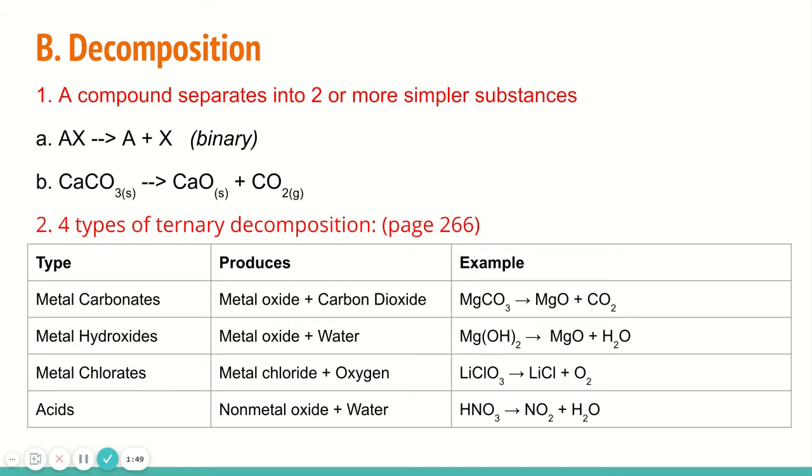However, usually when we see decomposition, we see it with ternary decomposition a lot. So that's three elements or more. We have calcium carbonate in example B, which is going to break down into calcium oxide and carbon dioxide. The subcategories for decomposition of ternary compounds is down below in this chart.